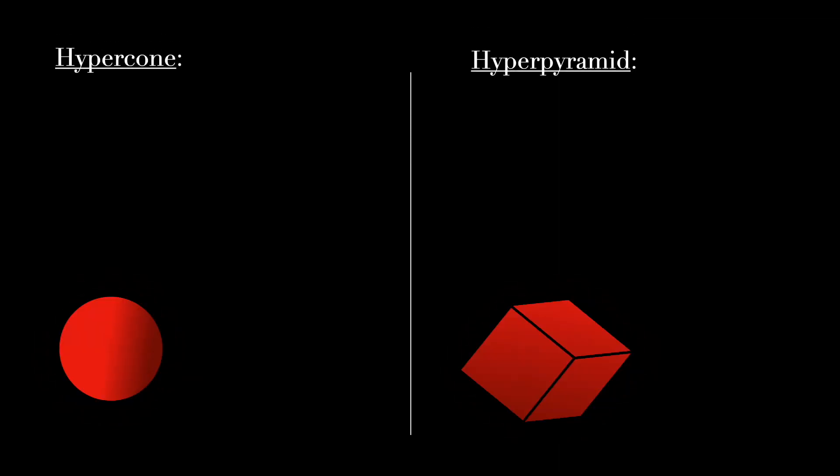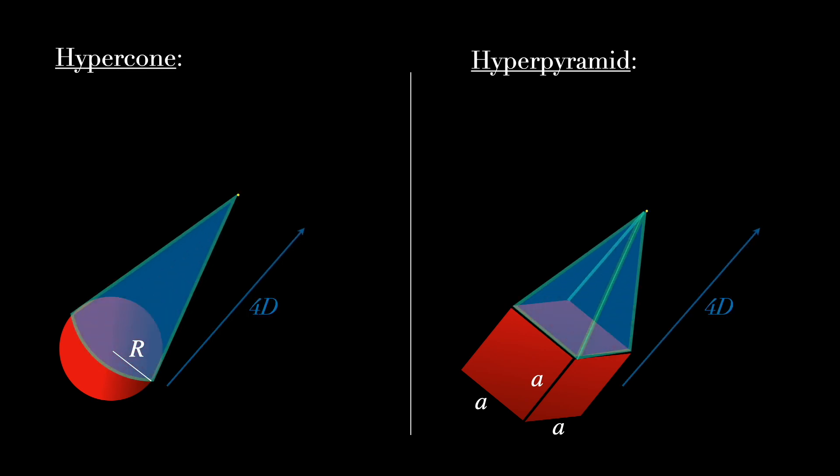To finish the video, let's extend the same example of the cone and pyramid to four dimensions. Now we use a hypercone instead, in other words a cone in four dimensions with a three-dimensional base corresponding to a sphere of radius capital R, an apex, aka the highest point, at height h along the fourth direction. And then we compare it to a hyperpyramid, in other words a pyramid in four dimensions with a three-dimensional base corresponding to a cube of side A, an apex at height h along the fourth dimension.